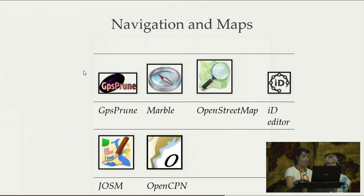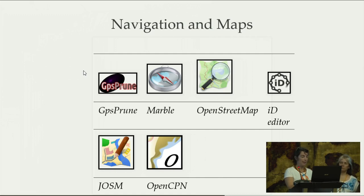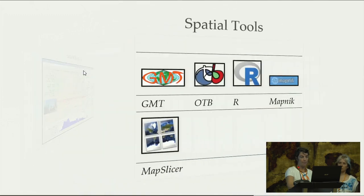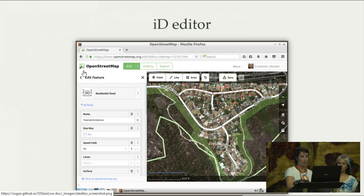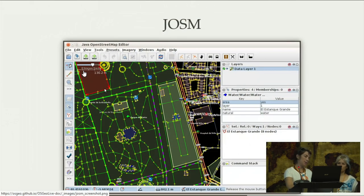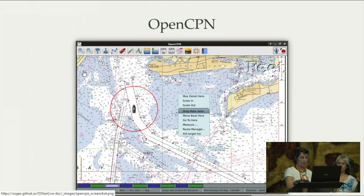For navigation and maps, we are happy to have OpenStreetMap with OSGeo Live. We can update the OpenStreetMap data each time to fit to the FOSS4G conference location. We ship with ID Editor, JOSM, and other tools. We also have GPS Prune to handle GPS data, Marble as a desktop application to view data on the globe, and OpenCPN for navigation maps.